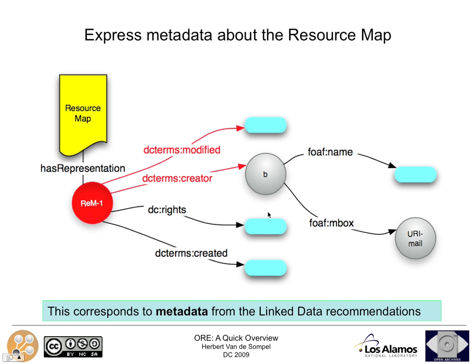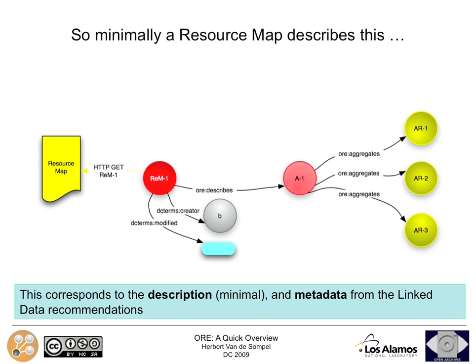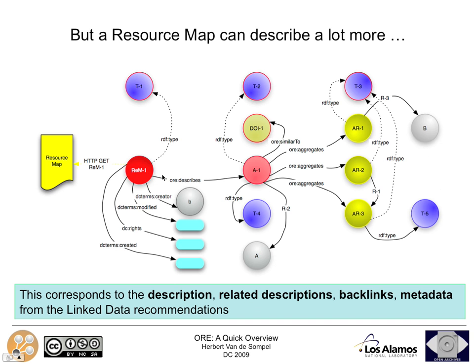In addition to that, we want to express some metadata about the resource map: who created it, when was it most recently modified — because we want to know who says something about an aggregation. A resource map minimally describes the aggregation, the aggregated resources, and gives some crucial metadata about the resource map itself. But it can obviously describe a lot more. Here you see a rather expressive resource map with all kinds of relationships and properties pertaining to the aggregation, the aggregated resources, and the resource map itself.